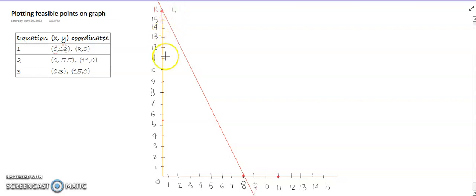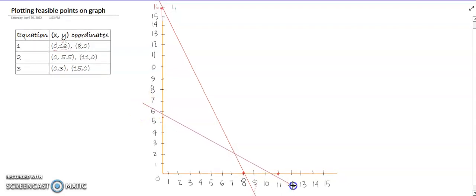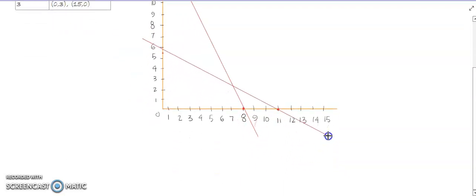We have to make a line again, so a line will be running from this place from 5.5 to 11. You can adjust it anytime you feel like it is not on exact points.